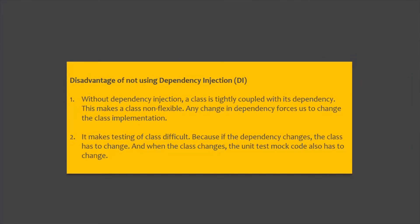The disadvantage of tight coupling is that the class is not very flexible, since any changes in the service class might break functionality in the component class. Anytime the dependency changes, the component class also has to be changed accordingly. Another disadvantage is that it makes testing difficult, because when the dependency changes, the class changes, and the unit test mock code also has to change.